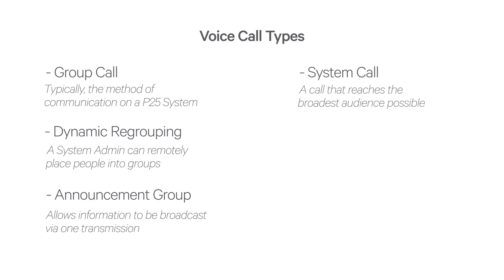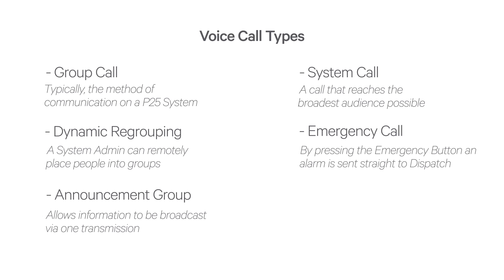P25 also supports an emergency call. An emergency call provides users with the ability to inform dispatch personnel of a life-threatening situation. By pressing the subscriber unit's emergency alarm button, an alarm is sent to the dispatcher via the control channel. The dispatcher is immediately notified of the emergency status by an audible alert and visual display at the console. The unit making the emergency call will be assigned the highest priority level of voice channel access to the network.